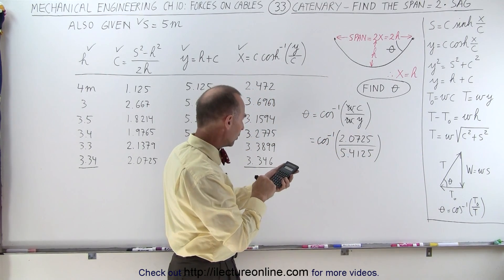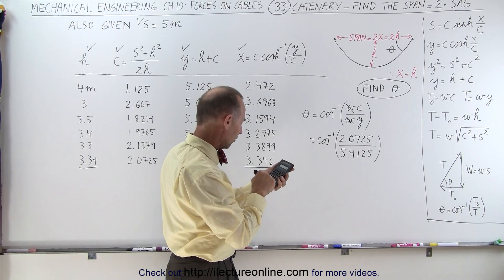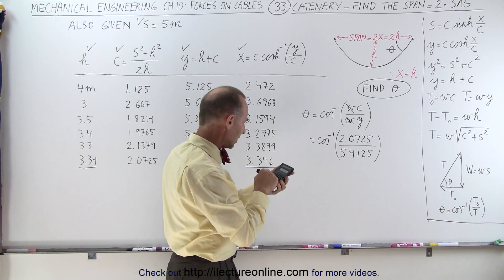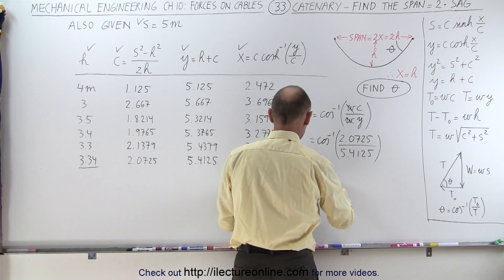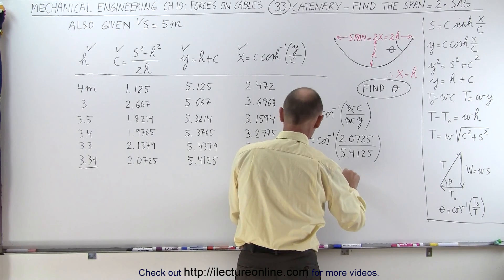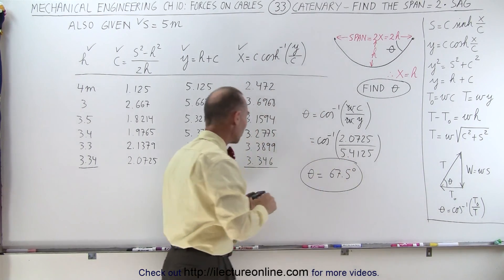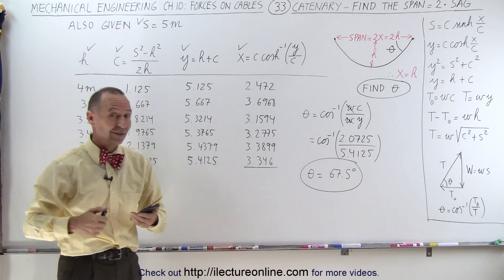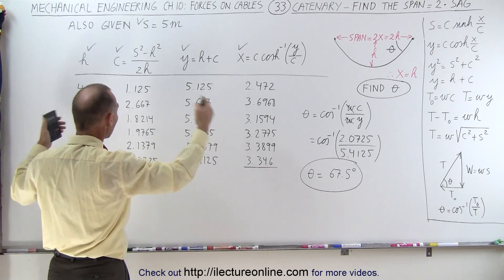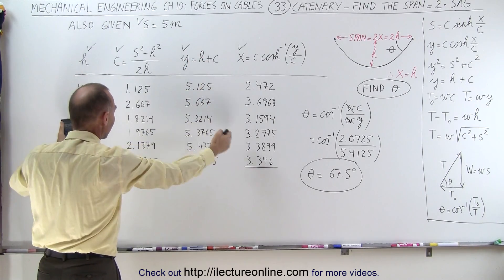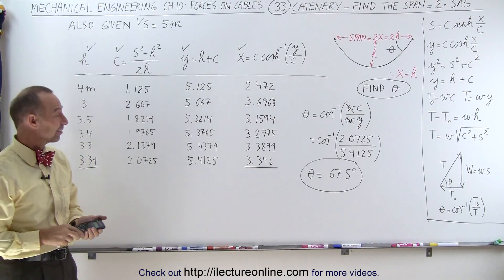And let's see what we get. So we have 2.0725 divided by 5.4125. Take the inverse cosine. And we get the angle being equal to 67.5 degrees. And that is how we do that. So again, it's an iterative process. We were simply given that x equals h. So we have to go back and forth until we find a value where x is close to h. And now we can calculate the angle from that. And that's how it's done.